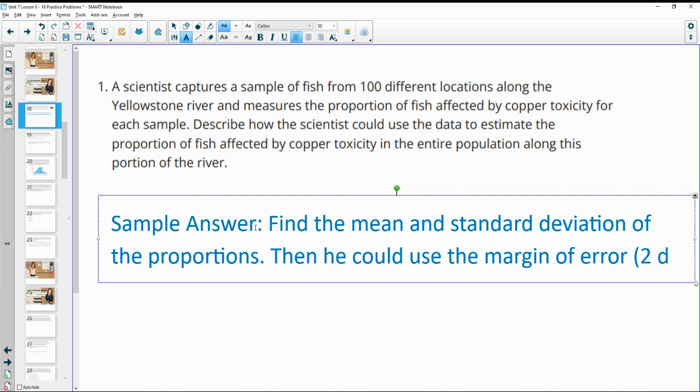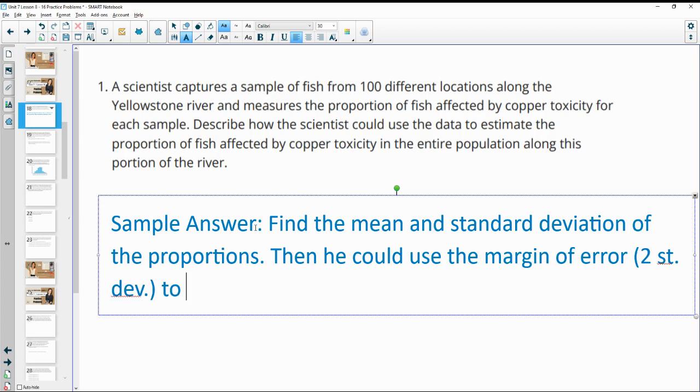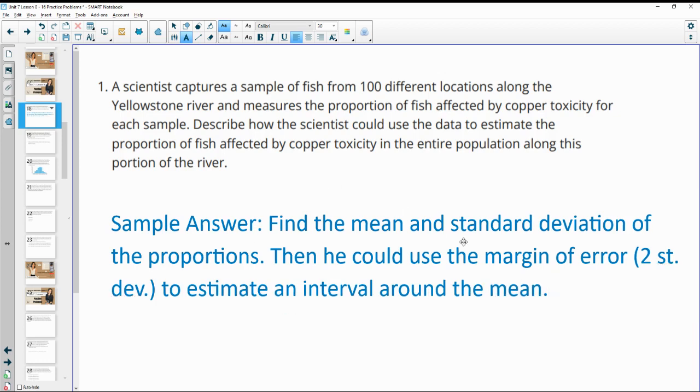which is two standard deviations, to estimate an interval around the mean. So find the mean and standard deviation, then you could use the margin of error to estimate the interval around the mean and then it's likely that the population's actual mean would be in that interval.